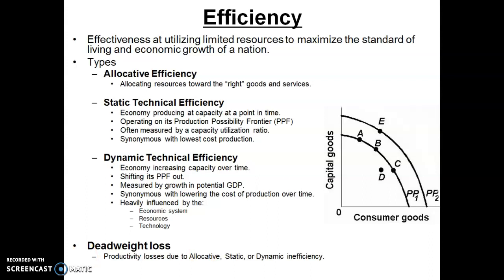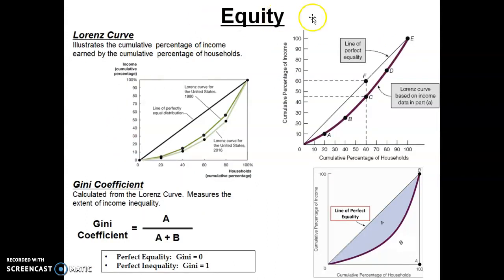Let's move on to the next economic outcome: equity. This is by far the most subjective and contentious one we look at. Before we get into the debate over what constitutes equity, we need to build some objective measurements of income, because the equity question revolves most notably around who gets the income generated in a country. The first model we'll build is called the Lorenz curve — it illustrates the cumulative percentage of income earned by the cumulative percentage of households.